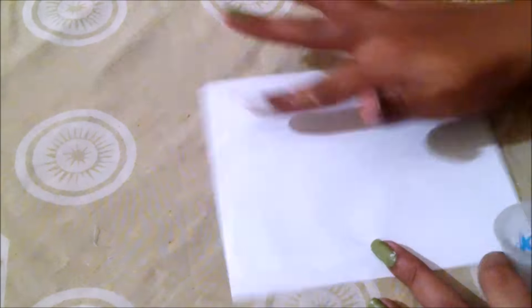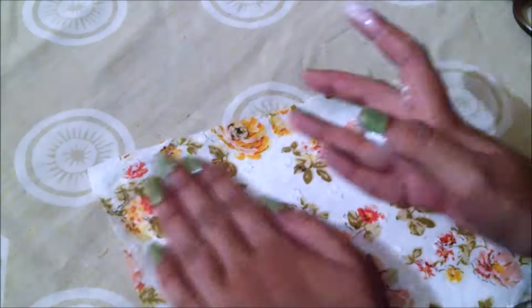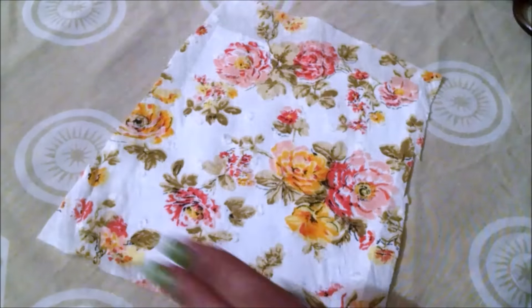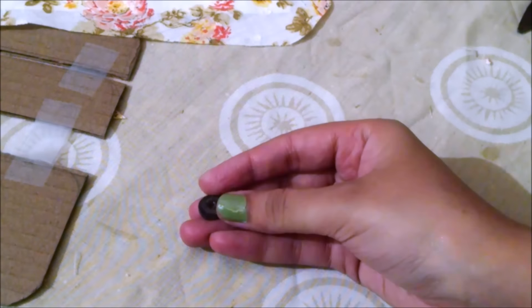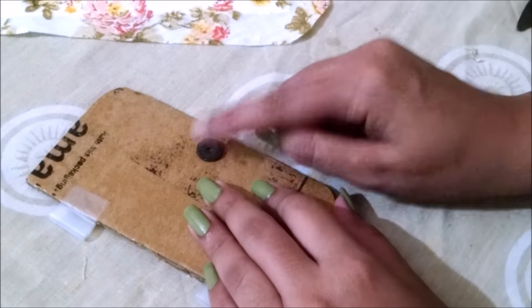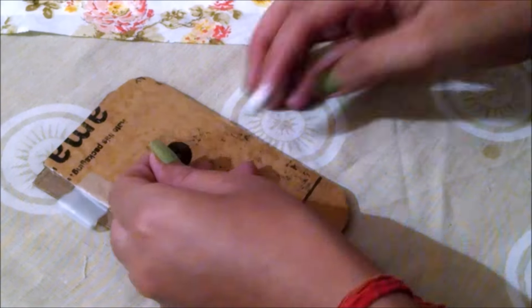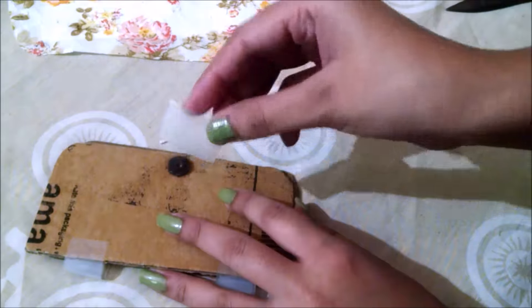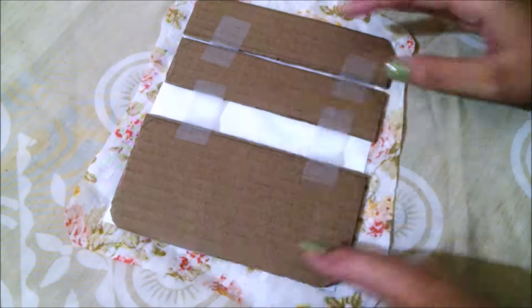Apply glue on the top of the white sheet. Now take a magnet and place it on the center of the cardboard and secure it with glue on the back side and with tape on the upper side. Now wrap it with this cloth.